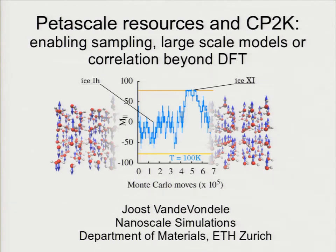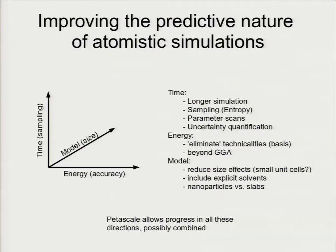It's already in the title: peta-scale resources in CP2K. CP2K is a code that I'm one of the main authors of. The topics are: enabling sampling, large-scale models, and correlation beyond DFT. These three topics have a common goal — to try and improve the accuracy, or the predictive nature, of atomistic simulations. They go along three different directions.